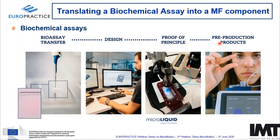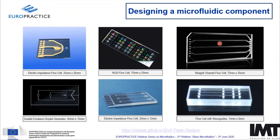If we look at glass products we are producing, going from impedance flow cells to NGS flow cells, to simple microfluidic straight flow cells, small flow cells with integrated waveguides, electrical impedance flow cells, or even multiple-level glass components to create double emulsion droplets. All of those require a channel network that needs to be described.